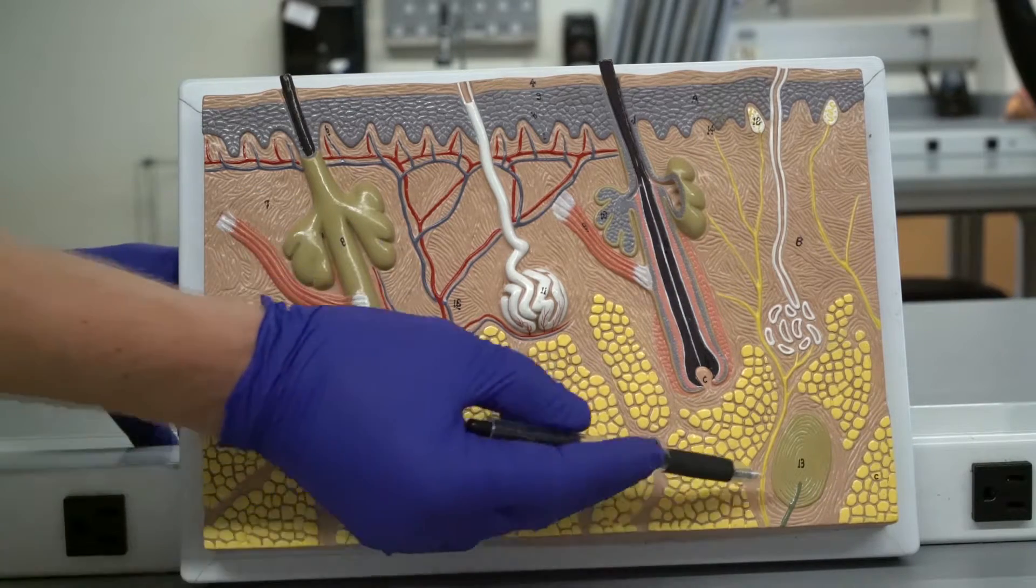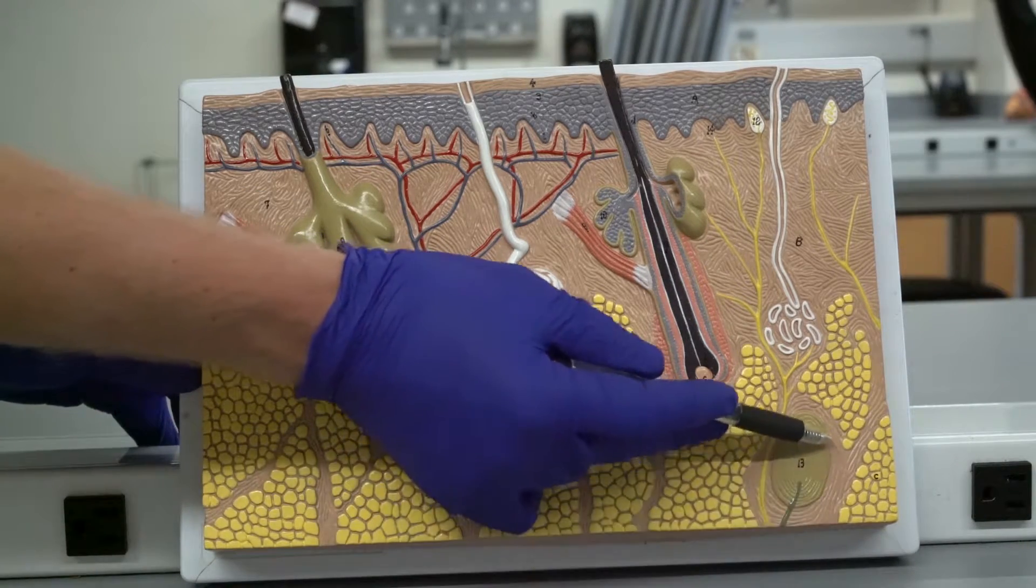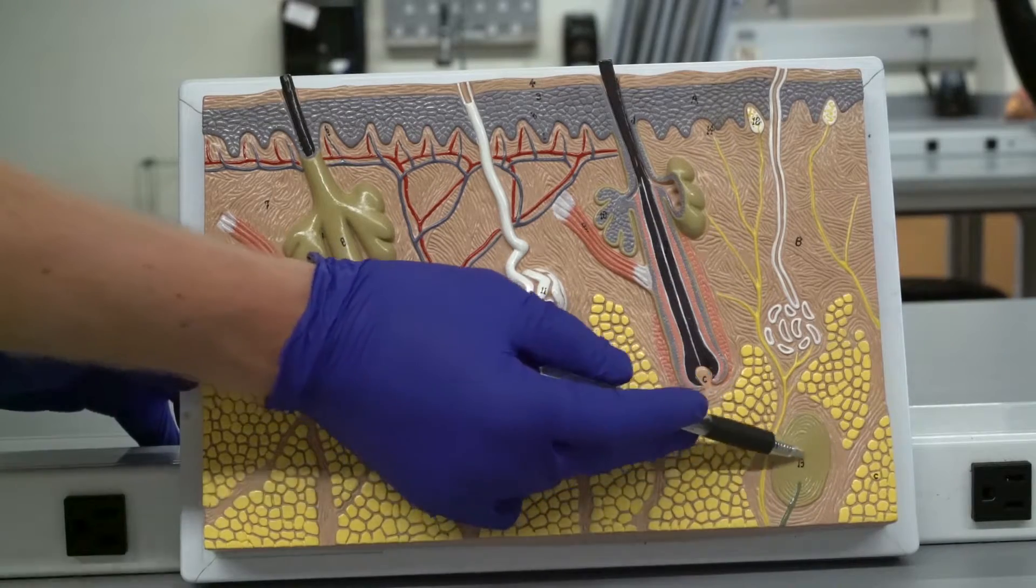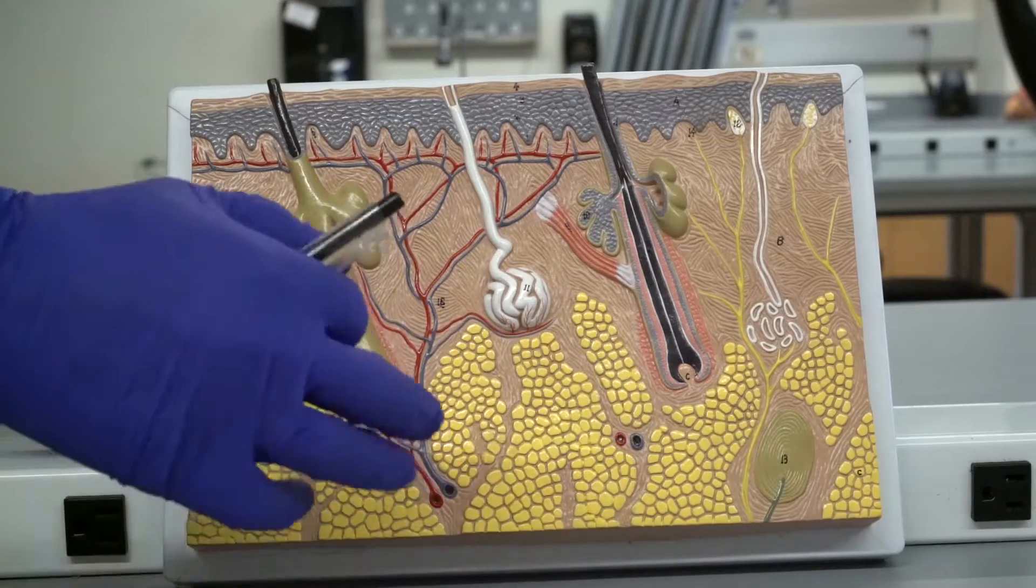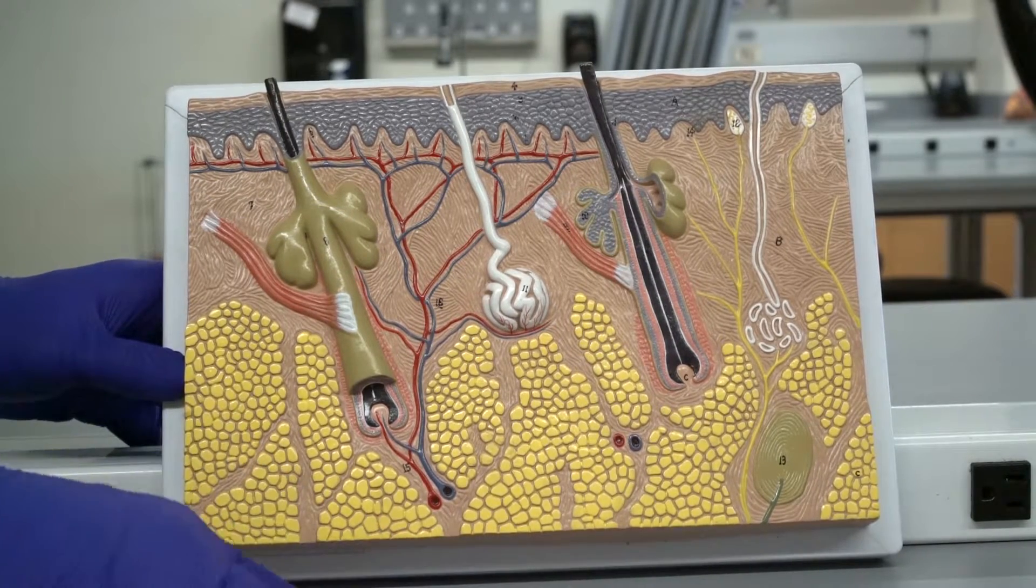The first one that we're going to talk about is this right here. It looks like an onion cut in half. This is your lamellar or Pacinian corpuscle. It's deep and it's used for deep pressure and touch.